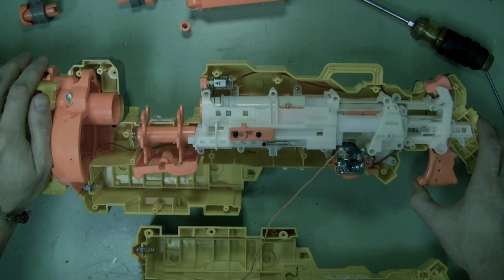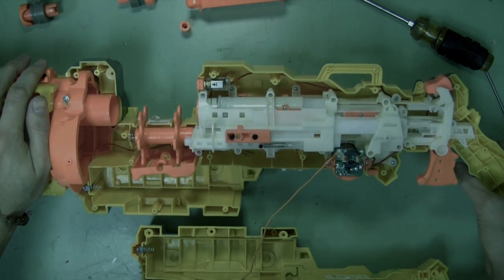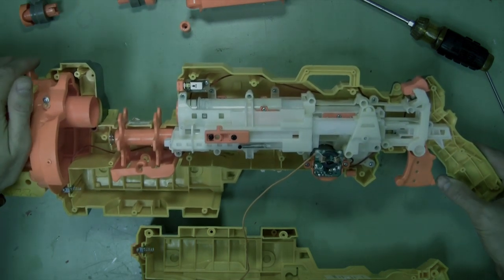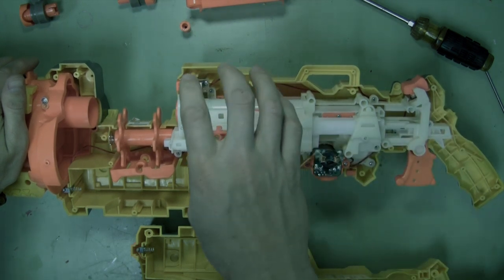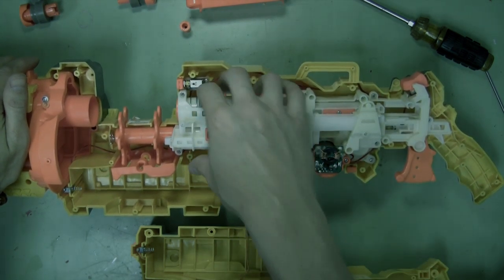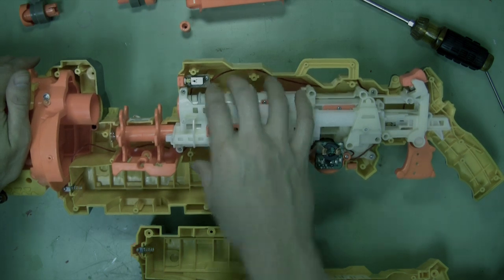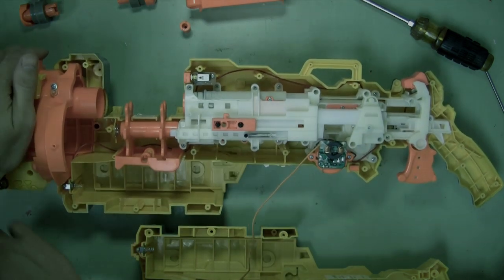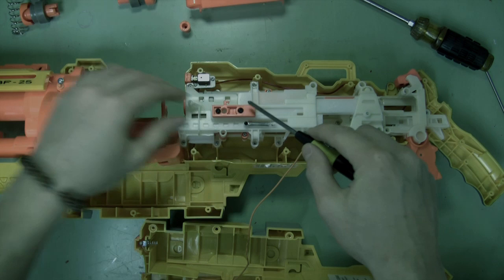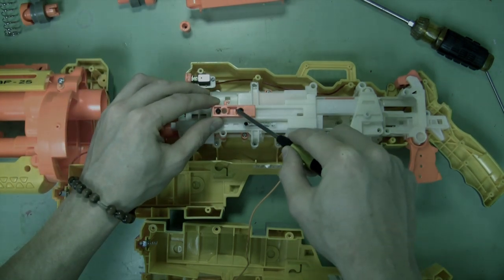Okay. Now this is one of the more tricky blasters to replace the spring on. You have to remove all of this and completely remove the plunger tube assembly. So to do that, first remove these two screws.